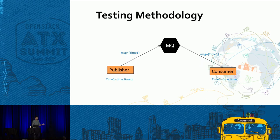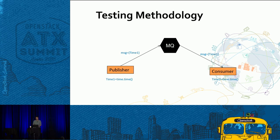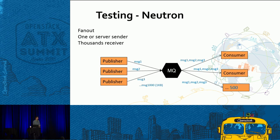To test performance differences between the two designs, we did some basic testing. We captured the timestamp of a message before it was sent onto the queue from the publisher, captured that same timestamp on the consumer end, and computed the diff. We synchronized time on all servers. For Neutron testing, it has a unique scenario with a small set of publishers that fan out the same message to multiple consumers — very few senders and many receivers.